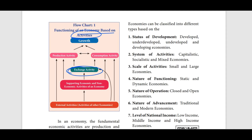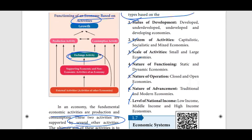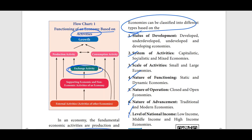So what types of economies are there? Economic types are classified based on: status of development, system of activities, scale of activities, nature of functioning, nature of operation, nature of advancement, and level of national income. Based on status of development: developed, developing, and undeveloped countries. Based on system of activities: capitalist economy, socialist economy, and mixed economies.